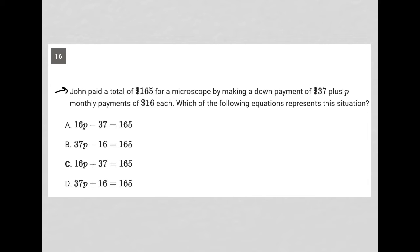So this question says, John paid a total of $165 for a microscope by making a down payment of $37 plus P monthly payments of $16 each.